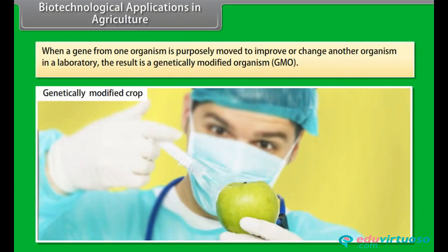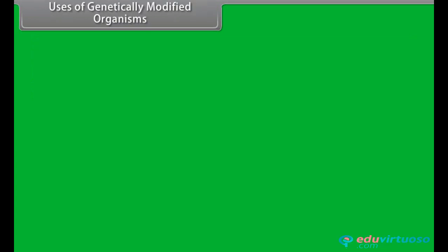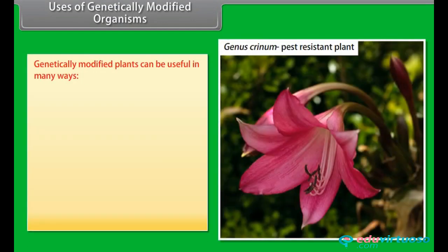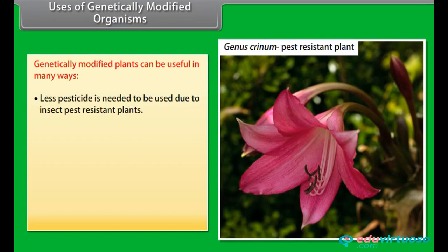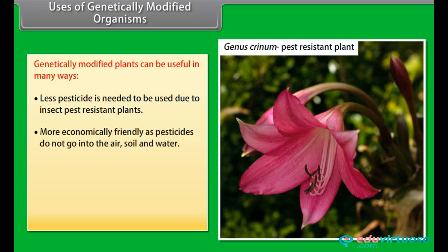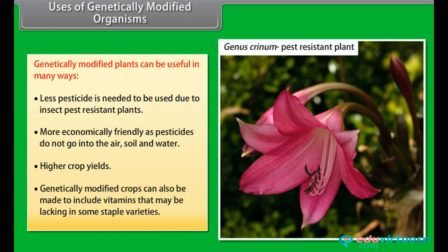When a gene from one organism is purposely moved to improve or change another organism in a laboratory, the result is a genetically modified organism, or GMO. Uses of genetically modified plants include: less pesticide needed due to insect pest resistant plants; more environmentally friendly as pesticides do not go into the air, soil, and water; higher crop yields; and crops can be made to include vitamins that may be lacking in some staple varieties.